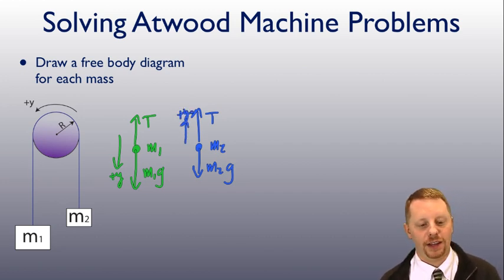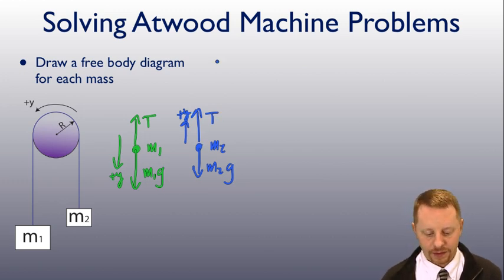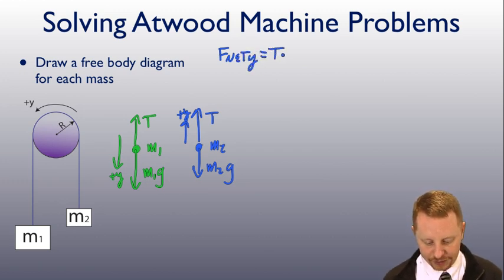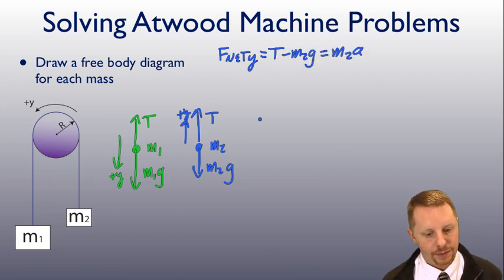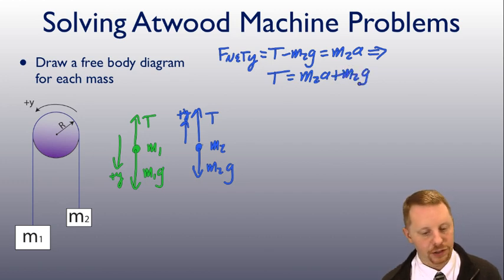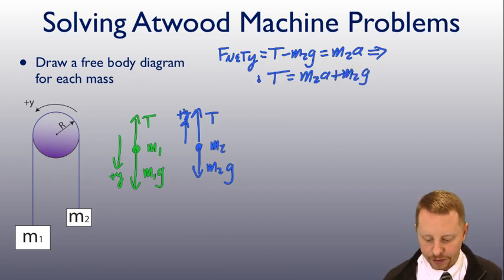So, from here, I can start writing Newton's second law equations. We'll start with the one for mass 2. Net force in the y-direction, looking at just mass 2, is going to be T in the positive direction, minus M2G. And that has to be equal to mass 2 times acceleration. Or, if I rearrange that to solve for tension, tension is equal to mass 2 times acceleration, plus mass 2 times G, the acceleration due to gravity. We'll call that equation 1.